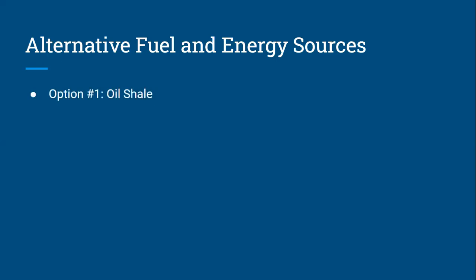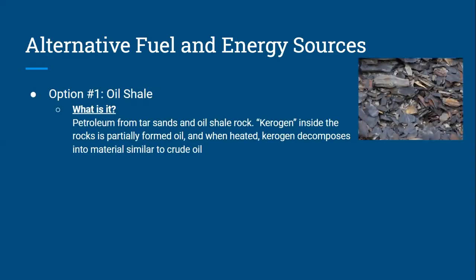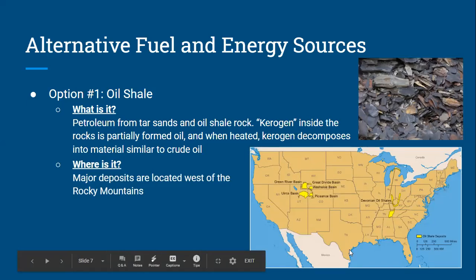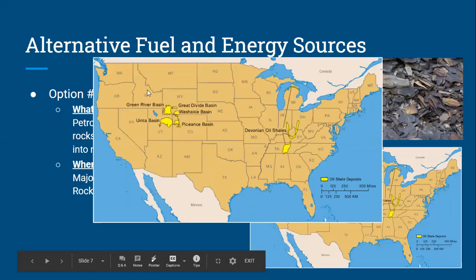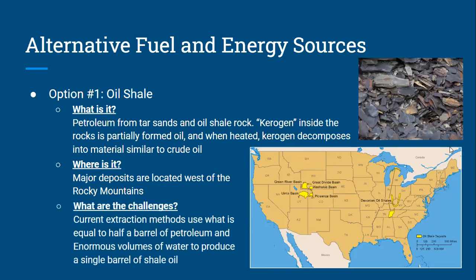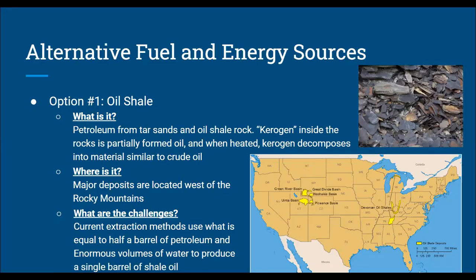Our first option is oil shale. It comes from tar sands and oil shale rock, which contains something called kerogen — a partially formed oil. When you heat it, it decomposes and makes a material similar to crude oil. Major deposits are found in the Rocky Mountains, and there are also deposits in the Kentucky, Tennessee, Indiana, and Ohio area. However, current extraction methods use the equivalent of half a barrel of petroleum just to produce a single barrel of shale oil, and it also uses enormous amounts of water — so we're using a lot of resources for limited output, which remains a significant challenge.